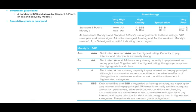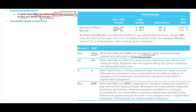An investment grade bond is a bond rated BBB and above by S&P, or Baa and above by Moody's. S&P — Standard & Poor's — and Moody's are the major rating agencies. S&P uses AAA for the highest quality, meaning the debt has the highest credit rating capacity to pay interest and principal — extremely strong. If you buy this bond, there is practically no chance of not receiving the money and interest.